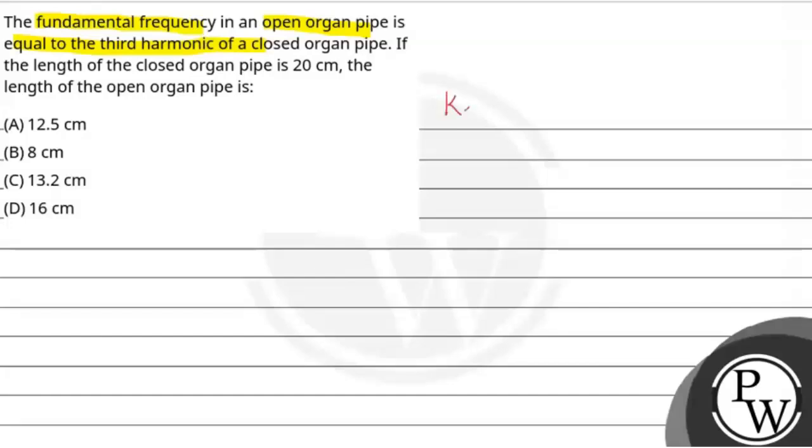So the key concept of this question is organ pipe. It is given that fundamental frequency F1 of an open organ pipe equals F3 of closed organ pipe.